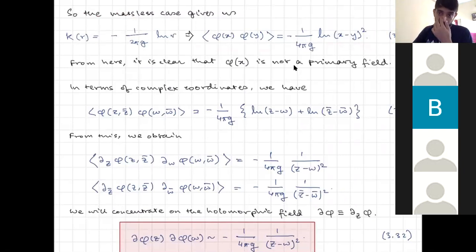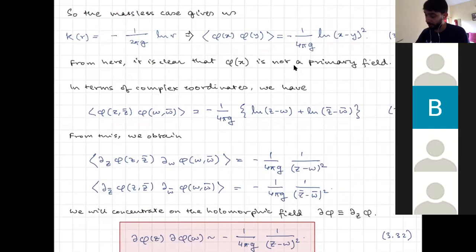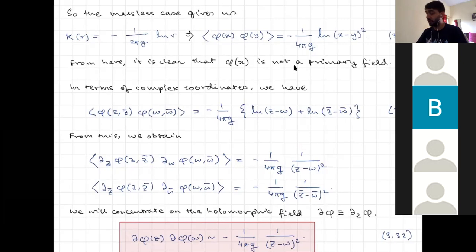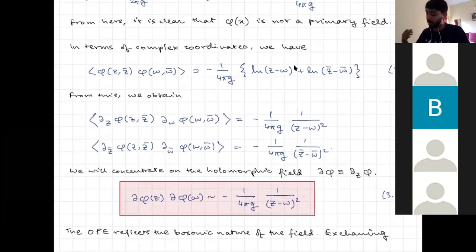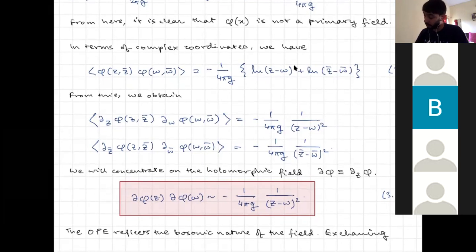That indicated that φ is not a primary field. Written in terms of complex coordinates z and z̄, we saw that this could be separated into a log of a holomorphic part and a log of an anti-holomorphic part. From this we could obtain the fact that if you look not at φ but at ∂φ, the two-point function went like 1/z².